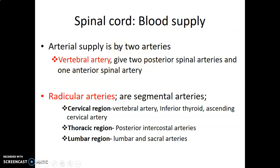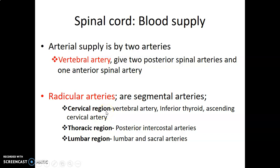Regarding blood supply to the spinal cord, there are two main arteries: the right and left vertebral arteries usually give two posterior spinal arteries and one anterior spinal artery. These are the main sources of blood supply to the spinal cord, especially the superior aspect. We also have radicular arteries, which are segmental arteries — the spinal cord being a longitudinal structure passing through cervical, thoracic, and lumbar regions gets blood supply from vessels within each region.